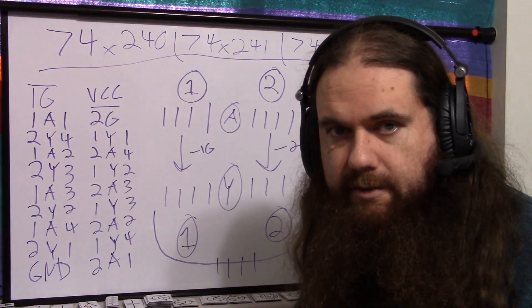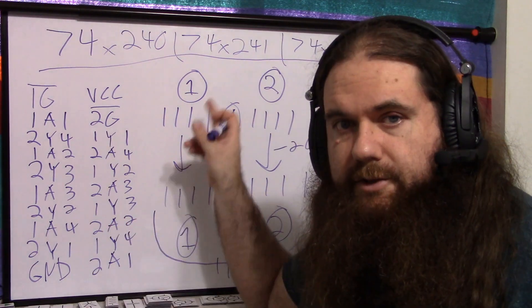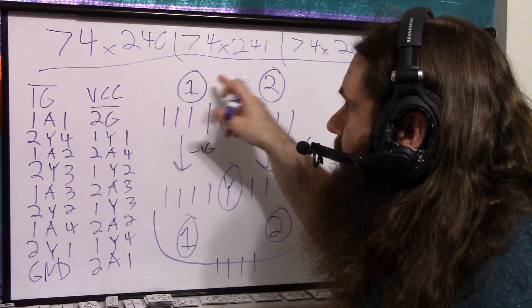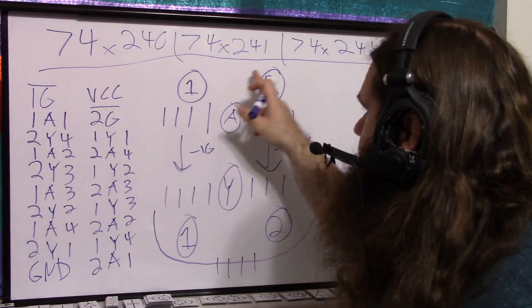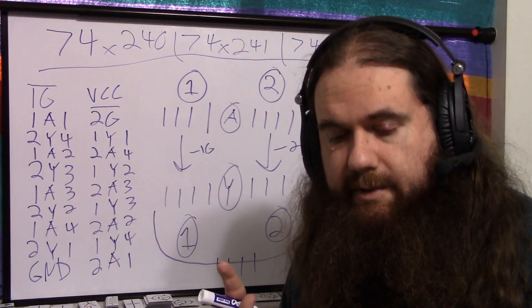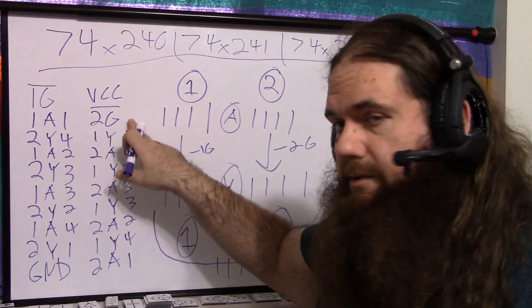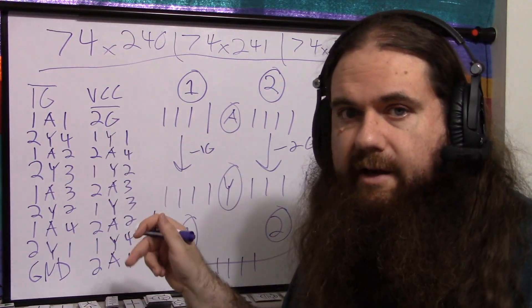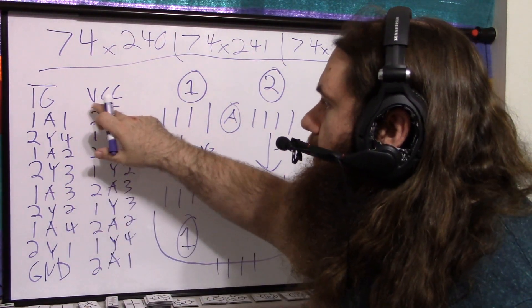So low means the signals are going through and high means they're not. The 241 is another non-inverting chip. It's exactly the same. 241 and 244 are the same exact chip except, according to the datasheet, 2G. Instead of being active low, it's active high. So the bar is not there.